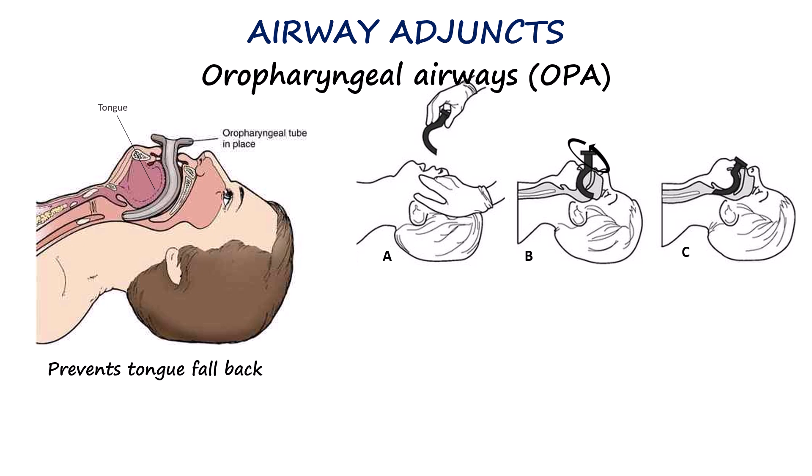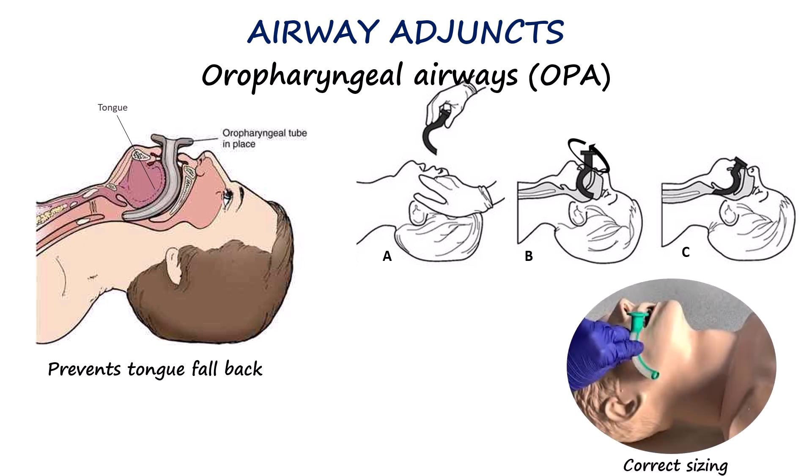Finally, push the airway in until the flange rests snugly against the patient's lips. Choosing the correct size is important; the appropriate airway is one that extends from the corner of the mouth to the angle of the mandible. The oropharyngeal airway should only be used in unconscious patients without a gag reflex, because insertion in a patient who is awake or semi-conscious can trigger gagging, vomiting, or laryngospasm.